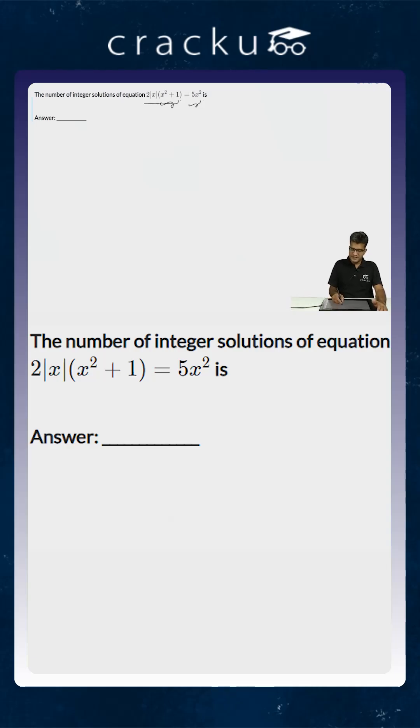So we will assume that modulus of x is equal to p, and p will be greater than or equal to 0 because modulus of x is always positive or at least non-negative. Now we know that x square is equal to modulus of x whole square, which is equal to p square.